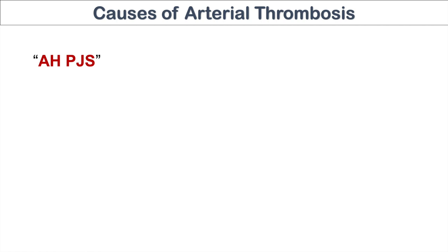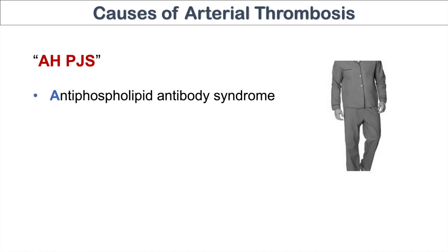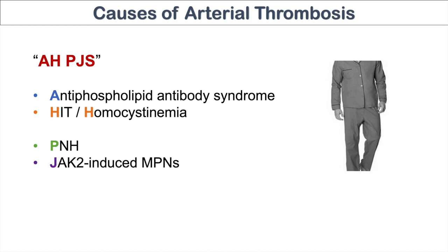We can remember the mnemonic APJs — think of comfortable pajamas. A is for antiphospholipid antibody syndrome, which can cause both arterial and venous clots. H stands for both HIT and homocystinemia, both of which increase the risk of arterial and venous clots. P stands for paroxysmal nocturnal hemoglobinuria, also a cause of both arterial and venous clots. Out of the malignancies, JAK2-induced myeloproliferative neoplasms are notorious for causing clots in arteries. And S is for sticky platelet syndrome, which can also lead to clots in arteries.